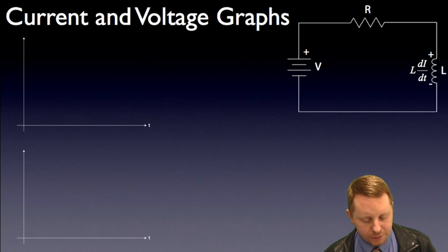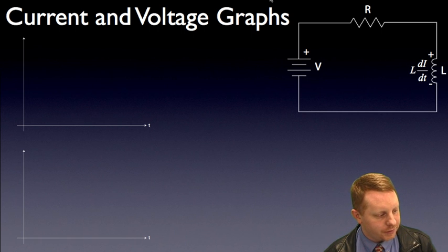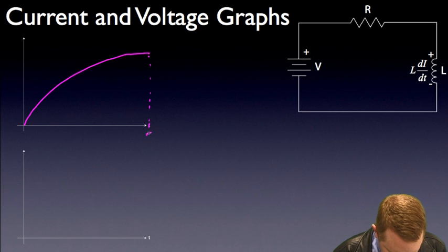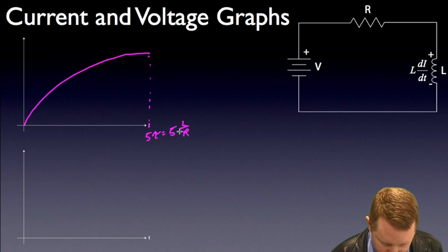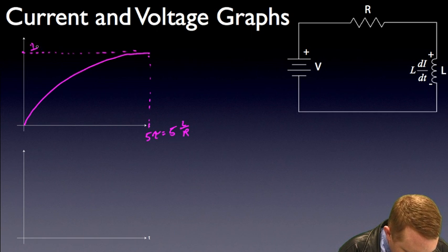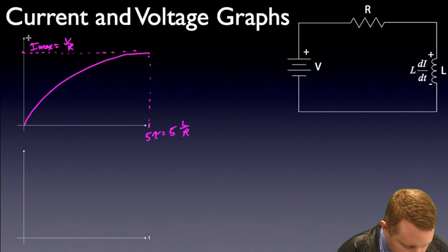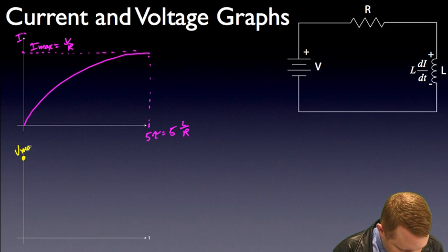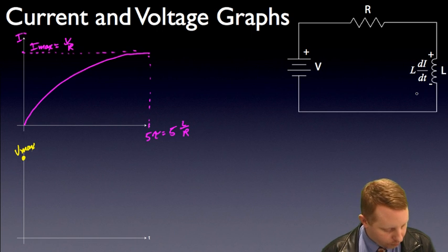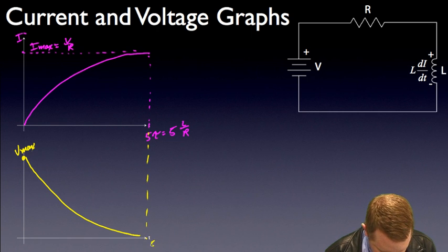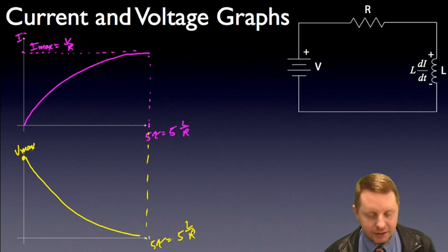Let's put this together to look at the current and voltage graphs. As we start the circuit out, we're going to have an initial current of zero and it's going to increase exponentially over a time period of about 5 tau — which is 5L/R — to about 99% of its final value. The asymptote is I_max which equals V/R. For the voltage graph, we start at maximum voltage at time zero across our inductor, and over time that follows an exponential decay, where by the time we get to 5 tau, which is 5L/R, we're at 99% of our final value, getting very close to zero voltage across our inductor.